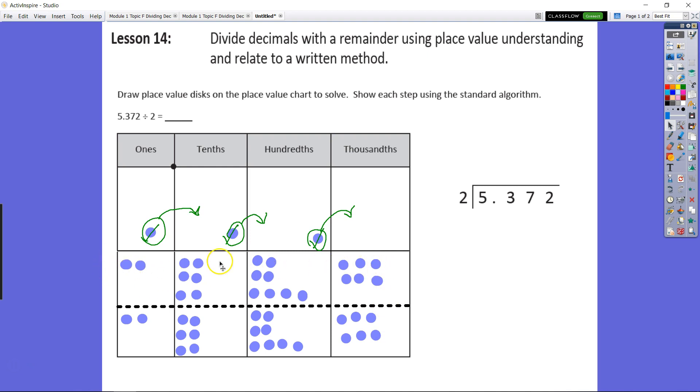Each group has two ones, six tenths, eight hundredths, and six thousandths. That's two and six hundred eighty-six thousandths, which we'll write on our line.